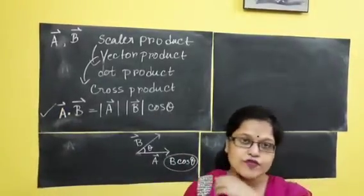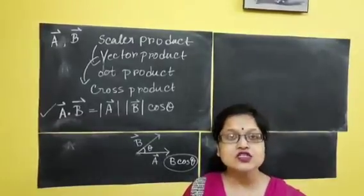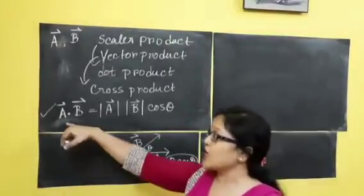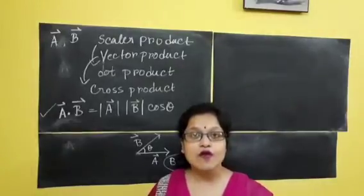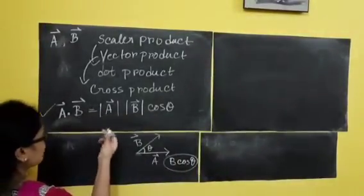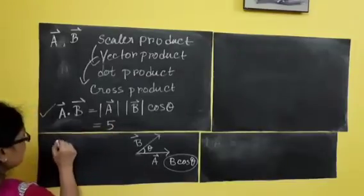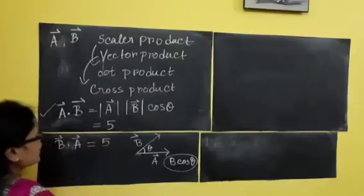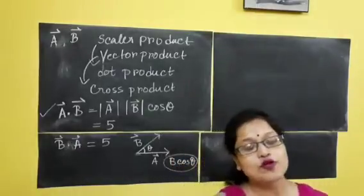There are some properties of this scalar product you should know. First of all, the scalar product is always commutative. That means whether you are doing A dot B or B dot A, both will give the same value. For example, if A dot B gives a value of 5, then B dot A will also give 5. So the first property is that scalar product is commutative.